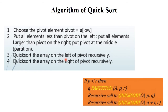The algorithm of quick sort consists of these steps: first, choose the pivot element — A[low] — the first element. Put all elements less than pivot on the left side, all elements larger than pivot on the right side, and put pivot at the middle partition. Third, recursively quick sort the array on the left of pivot, and recursively quick sort the array on the right of pivot. In programmatic form: if P is less than R, use partition, then recursively call quick sort on the left side and right side.